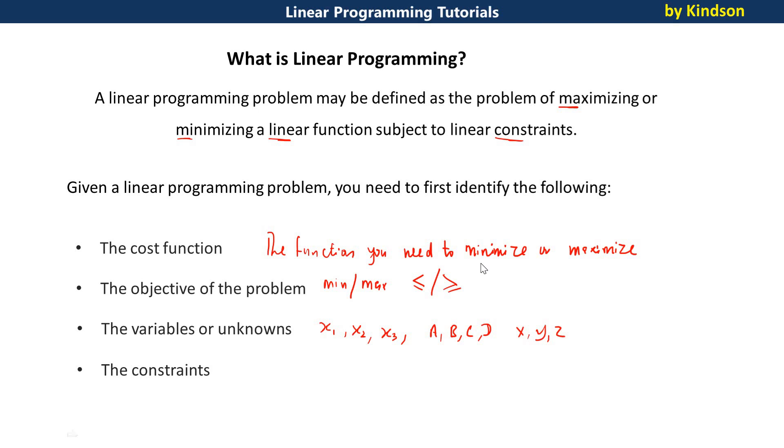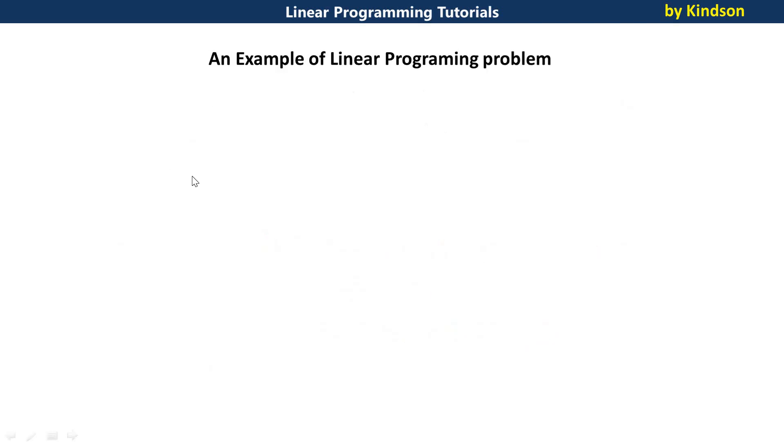To make this come alive, let's take a typical example. So let's take an example of a linear programming problem and identify these items. The problem goes this way. Find the numbers x1 and x2 that maximize the sum x1 plus x2 such that x1 is greater than or equal to 0 and x2 is greater than or equal to 0. And x1 plus 2x2 is less than or equal to 4, 4x1 plus 2x2 is less than or equal to 12, minus x1 plus x2 is less than or equal to 1. So this actually is how linear programming works.